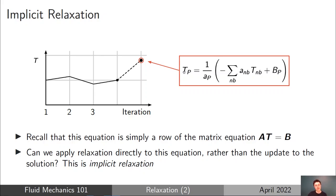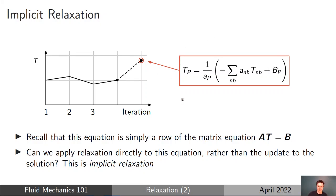If we'd solved the matrix equation, we would have calculated TP (T2), and that's the value we would have applied. Normally with explicit relaxation, we'd take the update and apply a fraction of it to get the updated temperature. Now that we have this equation for T calc, we can apply implicit relaxation to this formula and directly relax the calculation rather than relaxing the update.